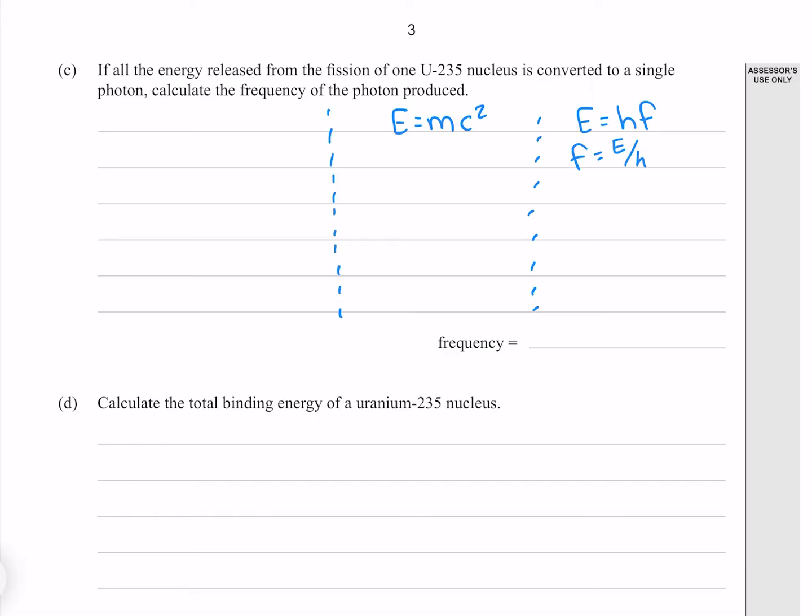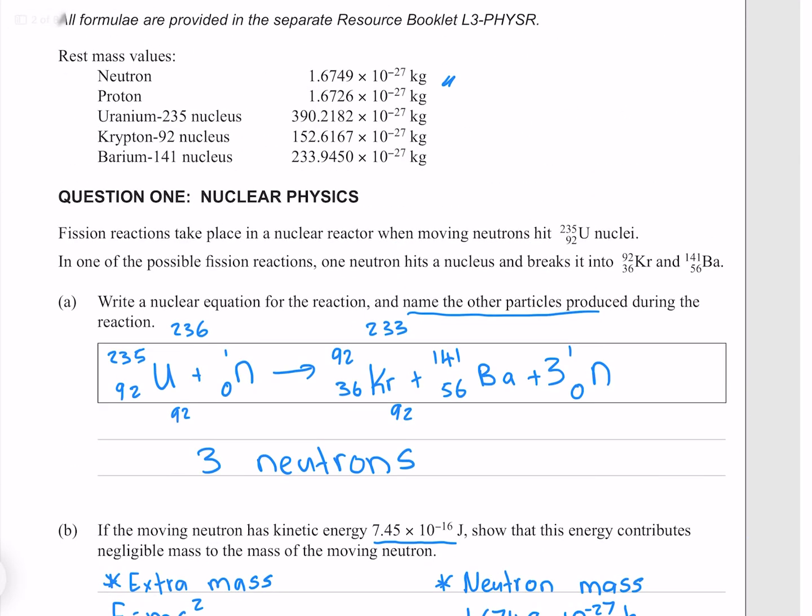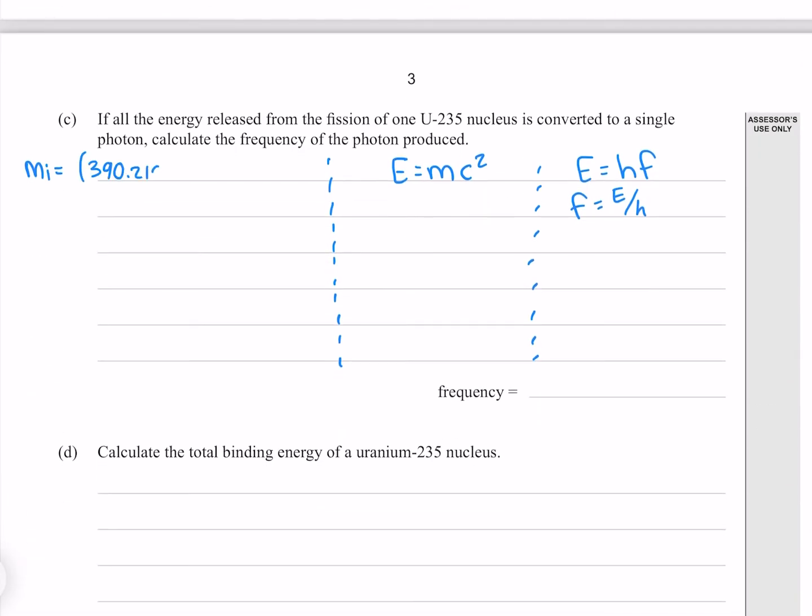To do this, we need to find our initial mass, which is the mass of our uranium-235, plus the mass of a neutron, both of which we're given here. Which gives me 3.9189 times 10 to the minus 25 kilograms.